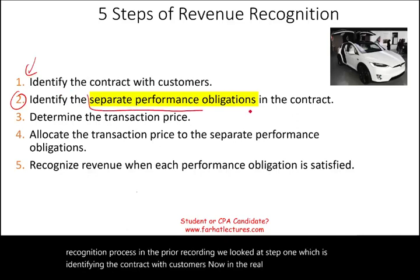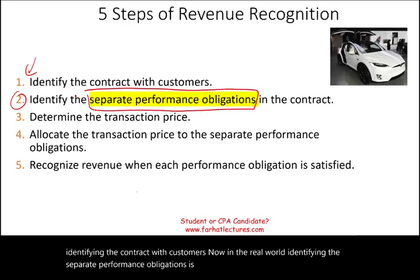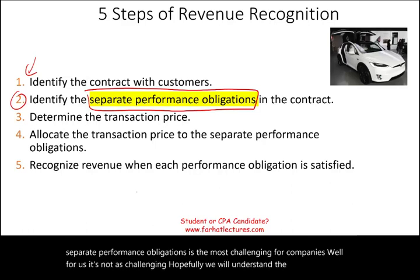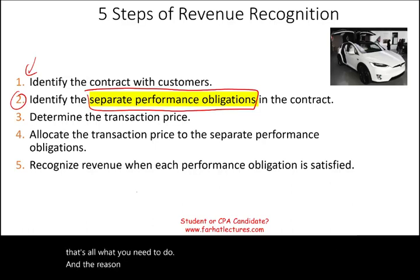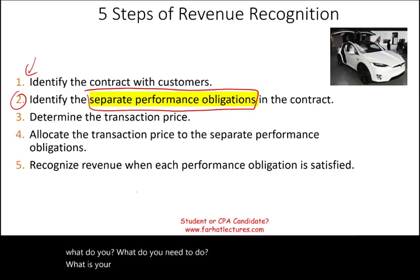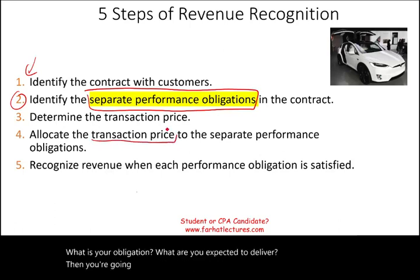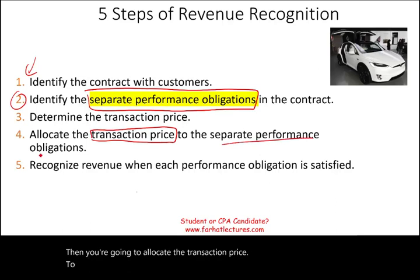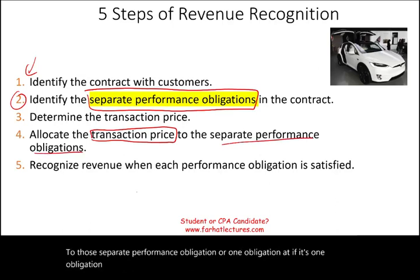identifying the separate performance obligations is the most challenging for companies. For us, it's not as challenging — hopefully we will understand the concept, and that's all you need to do. Once you identify the performance obligation — what you need to do, what your obligation is, what you are expected to deliver — you're going to allocate the transaction price to those separate performance obligations. If it's one obligation, it's pretty straightforward. If it's more than one, then you have to determine how to allocate the money.